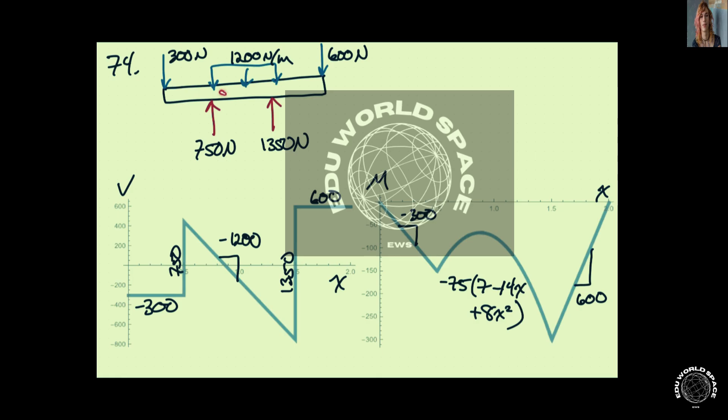And then, through this region, we have a slope of minus 1200. And we come down here and down. And then, when we get to this point, we jump up 1,350 newtons. And then, that gives us 600 newtons, which we have over here.